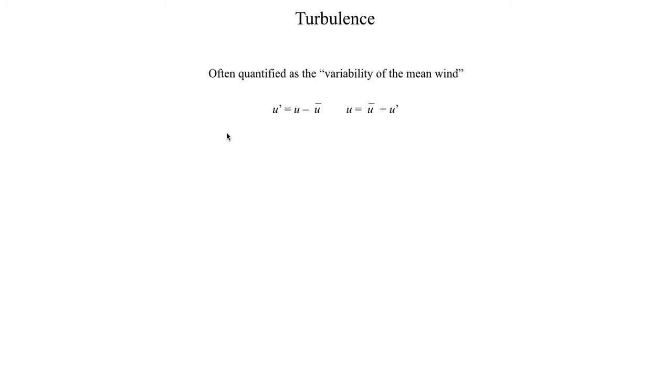Since we are meteorologists, we like to think of things in more sophisticated terminology. One such definition is the variability of the mean wind, or the variability of the wind pattern itself. Let's take a look at some of the mathematics behind this, going back to lecture 17, the lecture on climate, where we introduced the definition of the anomaly. The anomaly of an observed variable in the atmosphere equals the observed value minus the mean state. In the case of climatology, the anomaly equals the observed value minus the climatology, which is the mean obtained over several decades of data.